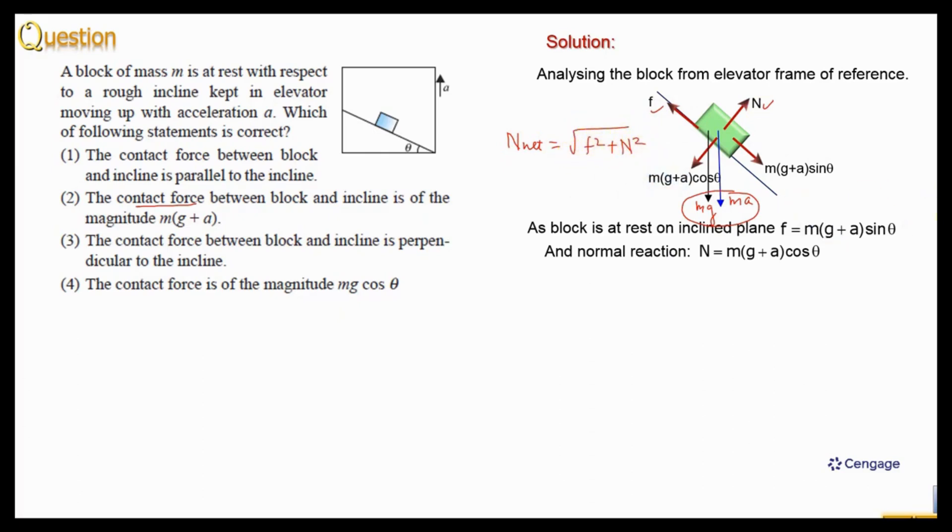So let us write the vector summation. This is the mg plus a sin theta whole square plus mg plus a cos theta whole square. So this will be the expression.